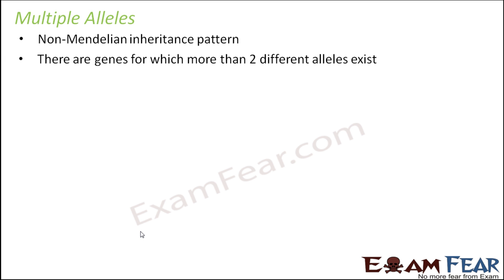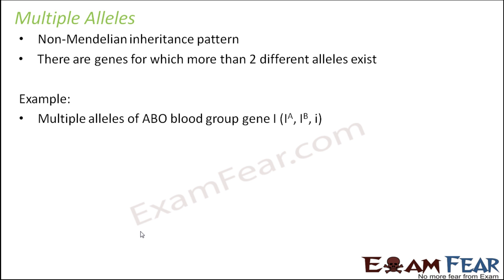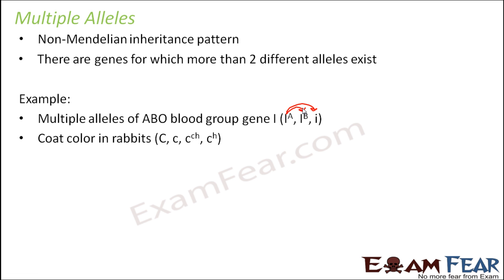There are genes for which more than two different alleles exist. The best example is the ABO blood group, which has three alleles: I^A, I^B, and I. Here you can see both complete dominance and co-dominance. Comparing I^A with I gives complete dominance, while comparing I^A with I^B gives co-dominance. So both types of dominance are seen in ABO blood grouping.